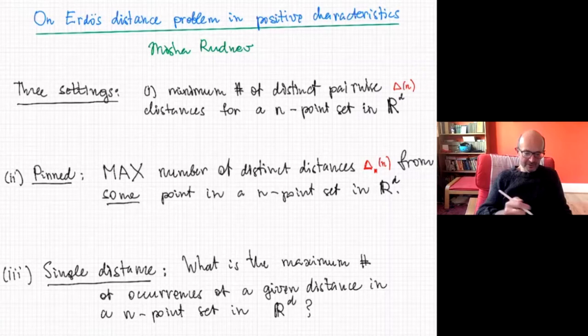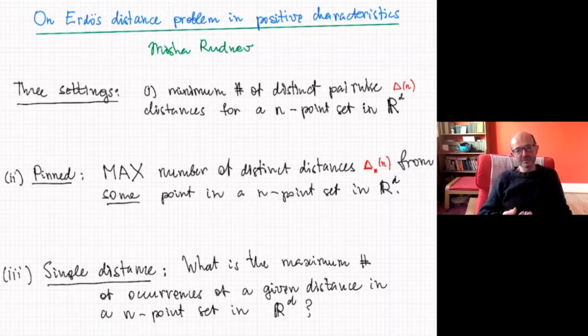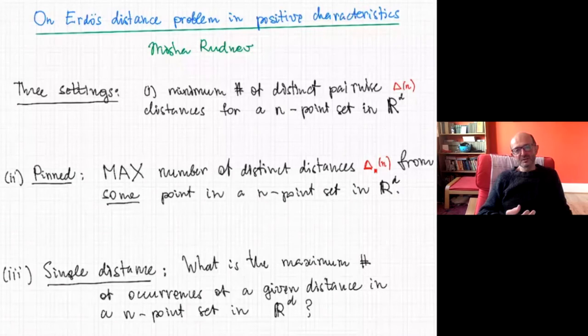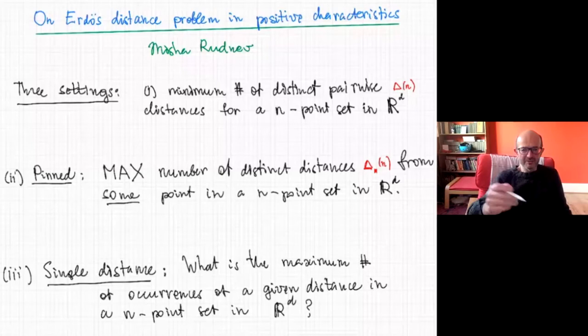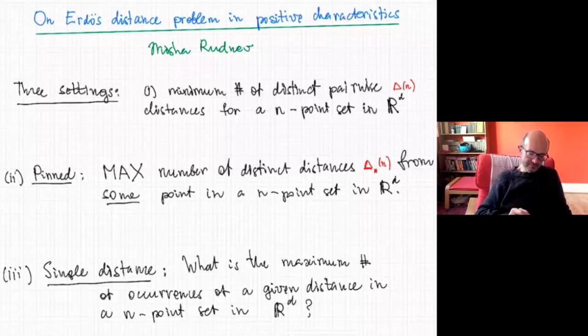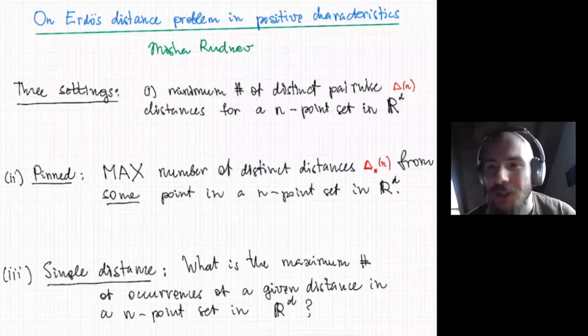This is all about the Erdős distance problem, but I'll talk about the positive characteristic case. In terms of how knowledgeable the audience is, I guess it varies, so if I should be quicker I can be quicker, if slower I can be slower. Ideally it would be nice if people interrupt me and ask questions, not using chat, because I have the iPad and pencil in front of me — the chat would just be too much.